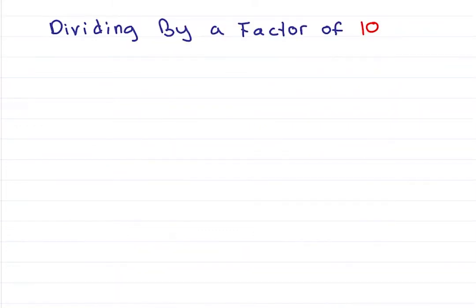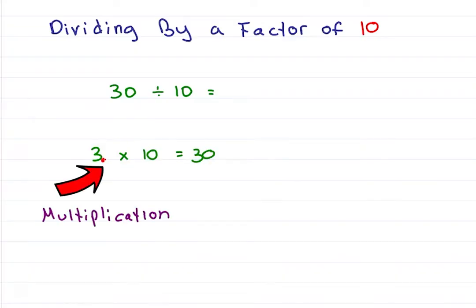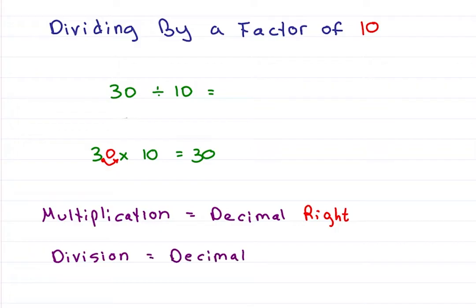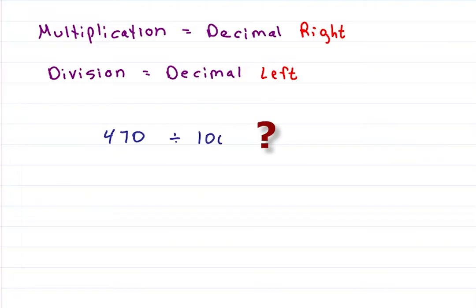If you have to divide by a factor of 10, for example 30 divided by 10, well if 3 times 10 is 30, then 30 divided by 10 should be 3. If multiplication has us moving the decimal to the right, division should have us move the decimal to the left. And so 30 divided by 10 gives us one decimal to the left for an answer of 3. Try 470 divided by 100. 100 has two 0s, so we move it back two spaces for a final answer of 4.70 or 4.7.